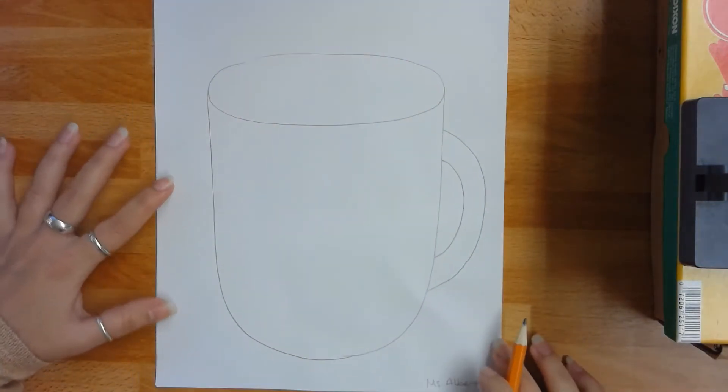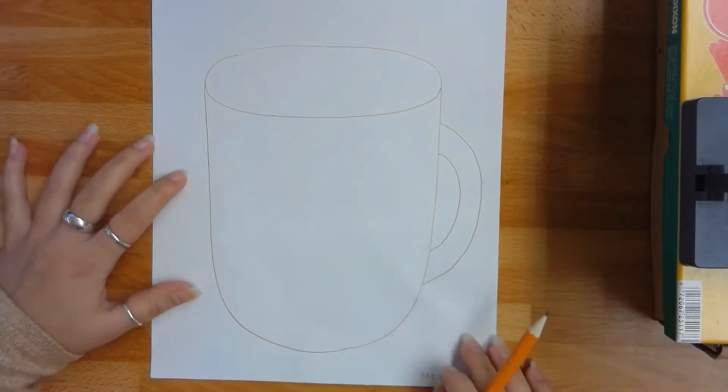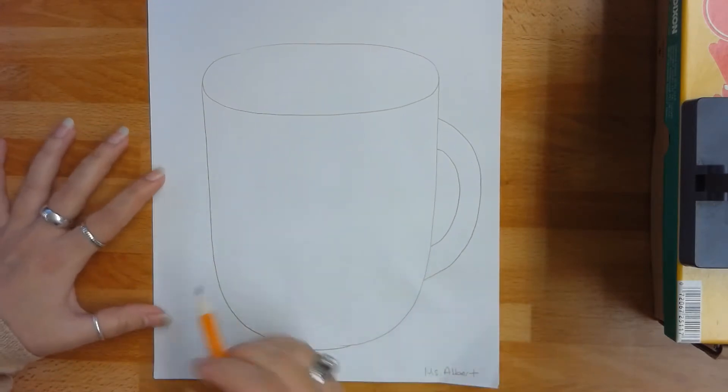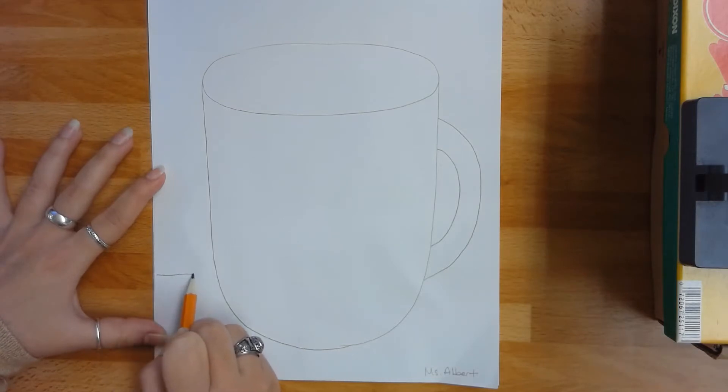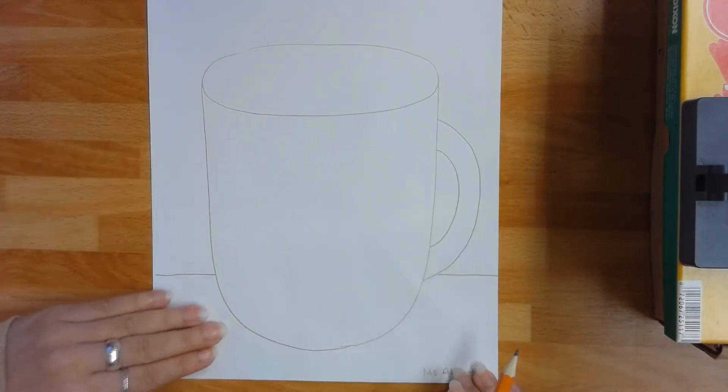I'm also going to include my background line, and that's going to help make sure that it doesn't look like my mug is floating in space. It'll look more like it's sitting on a table or some other kind of surface. So starting on one side of my paper, I'm going to go across until it touches the mug, pretend to keep going, and then finish the line on the other side. So this will be my table.